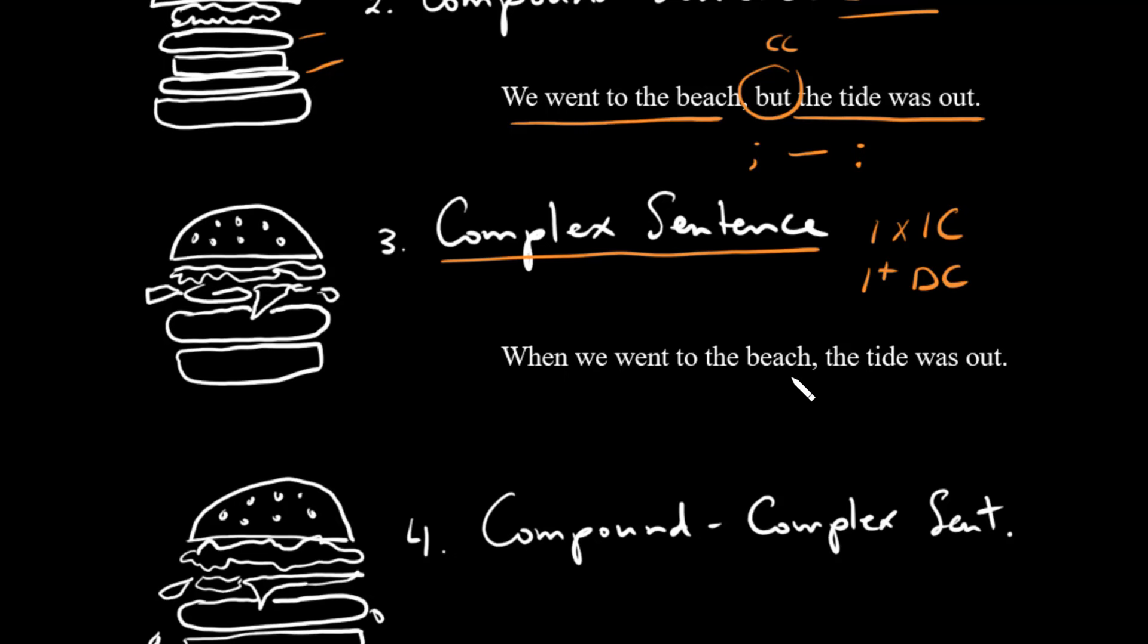So here we've changed our first clause into a dependent clause by adding when, and then we have an independent clause that comes afterwards. So what makes this a dependent clause is this subordinating conjunction. We can't have this as a complete sentence by itself, when we went to the beach. Instead when ties all of this to the second clause. And again you can have multiple dependent clauses that you can add to a complex sentence, but the key is really to have at least one independent clause and one dependent clause.